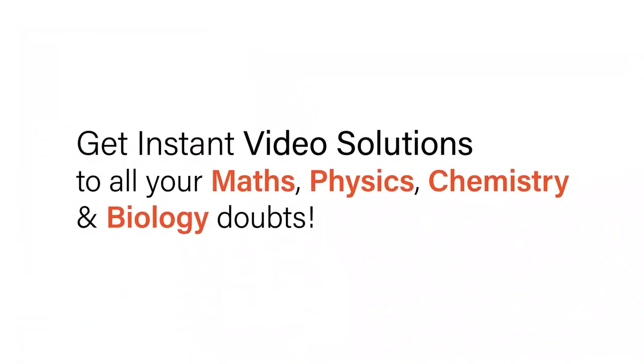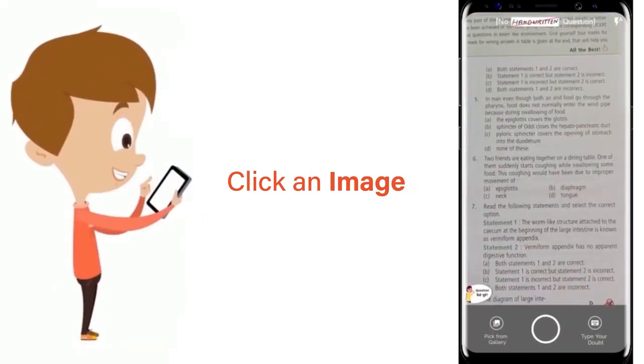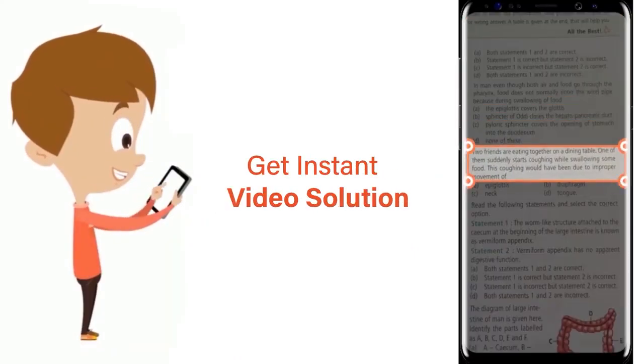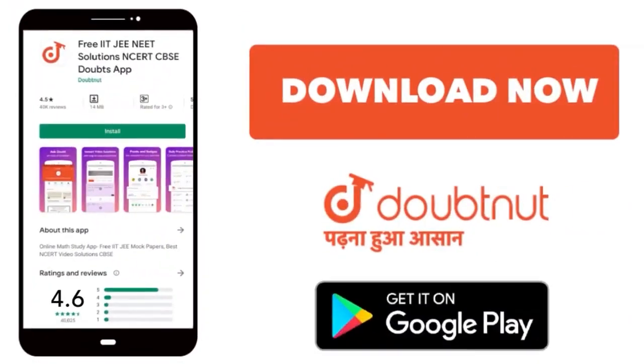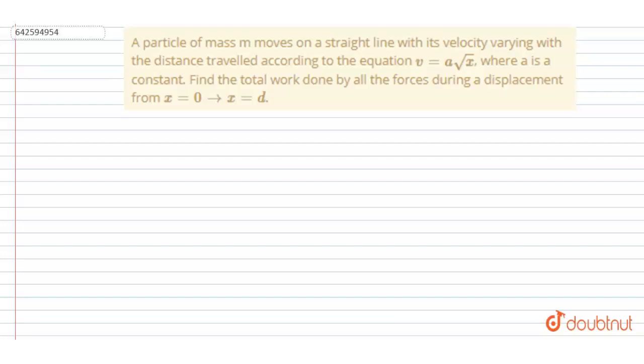With Doubtnut, get instant video solutions to all your maths, physics, chemistry, and biology doubts. Just click the image of the question, crop the question, and get instant video solution. Download Doubtnut app today. Hello everyone, a particle of mass m moves on a straight line with velocity varying with the distance traveled according to this equation.